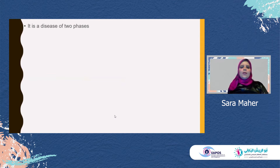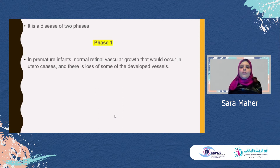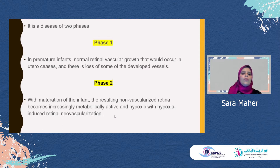ROP is a disease of two phases. In phase one, in premature infants, normal retinal vascular growth that would occur in utero stops and there is loss of some of the developed vessels. However, in phase two, with maturation of the infant, the resulting non-vascularized retina becomes increasingly metabolically active and hypoxic, with hypoxia-induced retinal neovascularization.